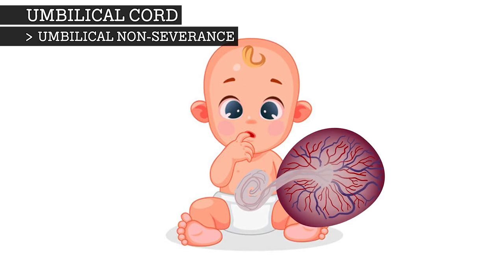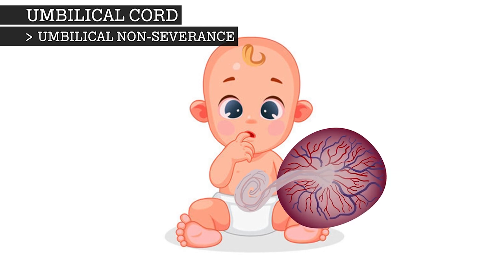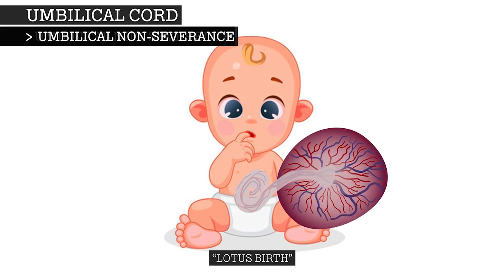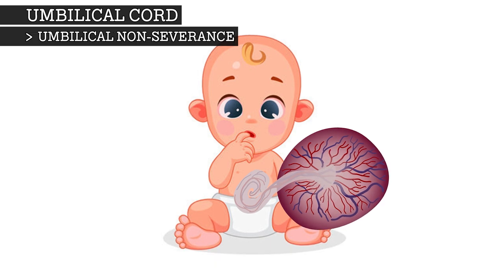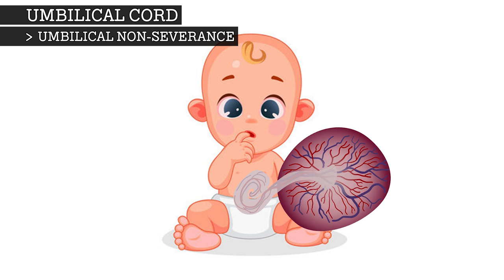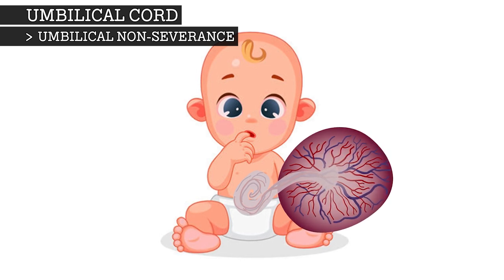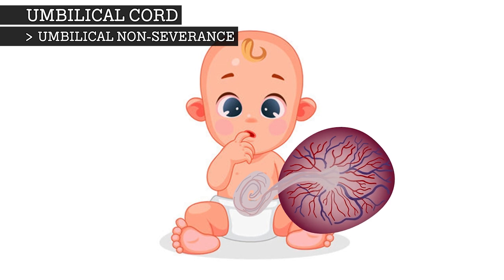Some parents choose to omit cord severance entirely in a practice called lotus birth, or umbilical non-severance. The entire intact umbilical cord and placenta is allowed to dry and separate on its own, typically on the third day after birth, falling off and leaving a healed umbilicus.